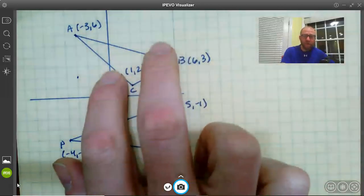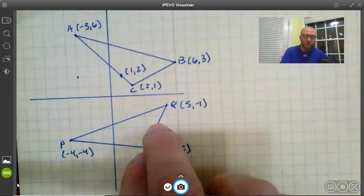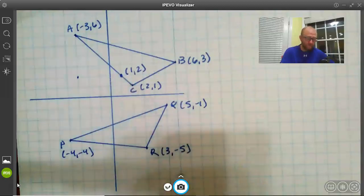So if I were to pick this triangle up and it looks like I might have to do some moving it around a little bit. I'm going to move it around and place it directly on top of this triangle where would this point end up.